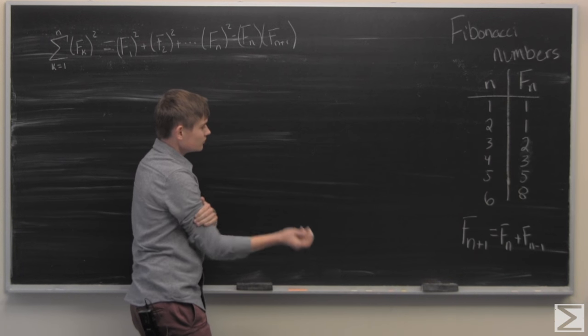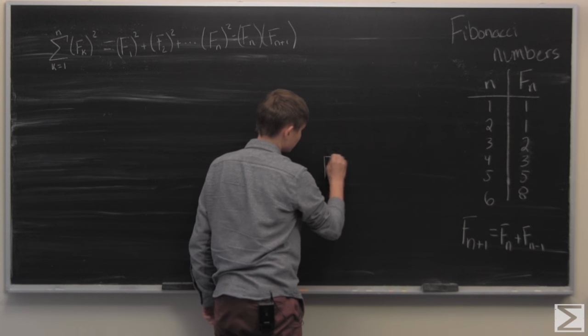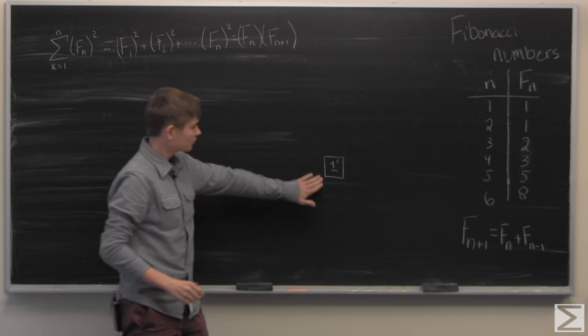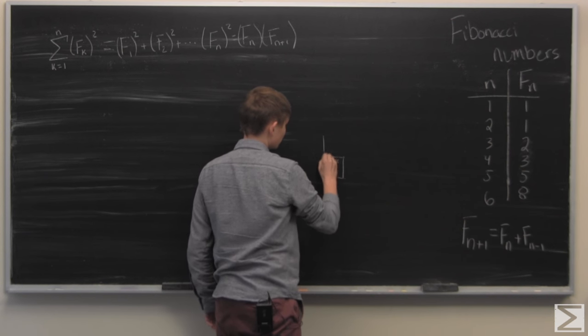And so geometrically when you square a number you get a square. Starting off we have 1 square and then the next number is 1, so we'll just put another one on top of this.